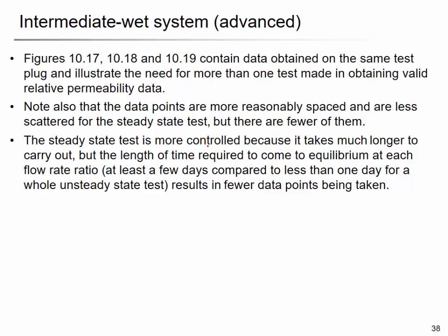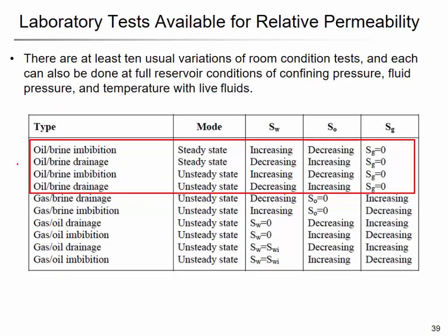To obtain the relative permeability curve in reservoir engineering, you have to consider the production condition and reservoir history — which fluid is saturating the reservoir. Depending on that, you may want to do oil and brine imbibition, oil and brine drainage, gas and brine, or gas and oil tests, in both steady state and unsteady state modes. Imbibition means you are in the water flood — injecting water and increasing water saturation. Drainage means you are injecting oil or a different immiscible fluid, decreasing water saturation.